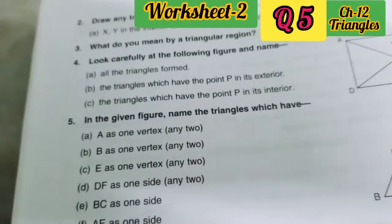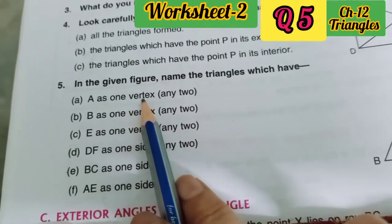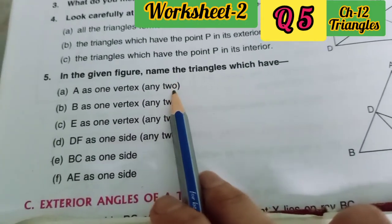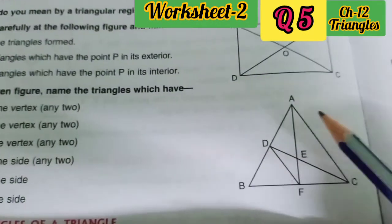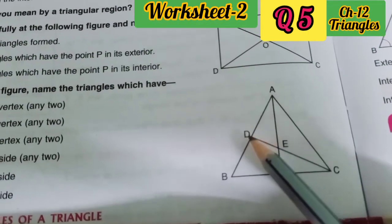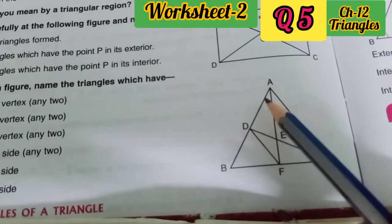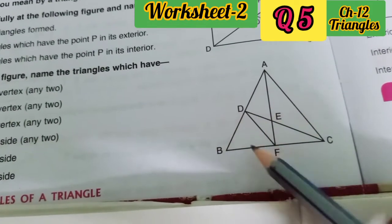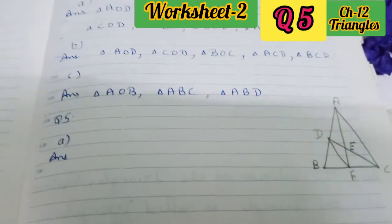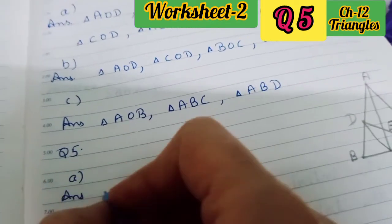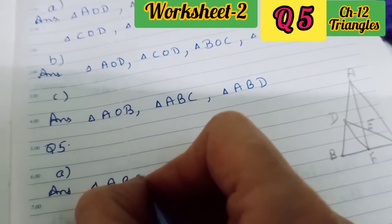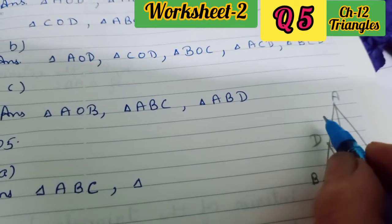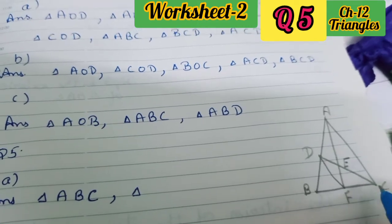In question number 5, in the given figure, name the triangles which have A as a vertex — any 2 triangles where A is the vertex. So here you can write ABC, ADE, ADF, ABF, ACF, or ACE — A can be the vertex in all of these. But you have to write any 2, so in your notebooks draw this figure and write the answer. I am writing triangle ABC, triangle ABF, or triangle ADC — you can write any one.